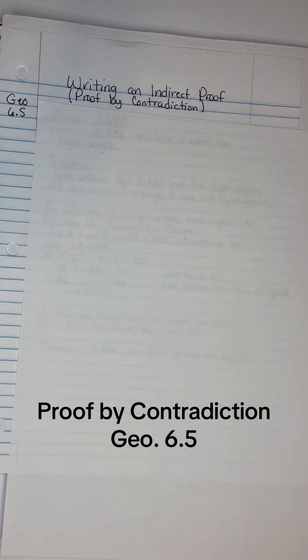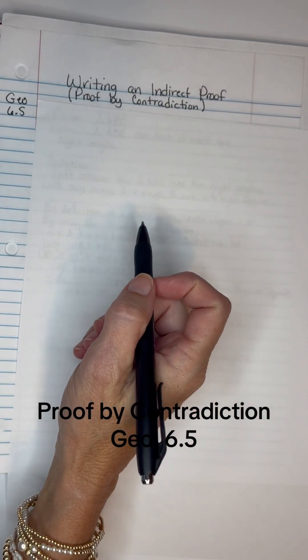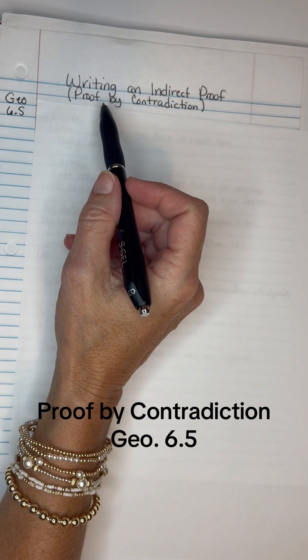We are going to write an indirect proof. Sometimes they're called proof by contradiction.